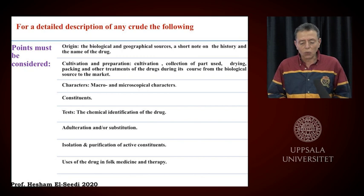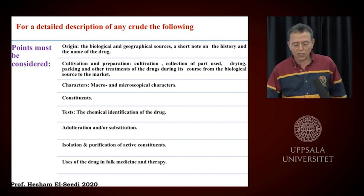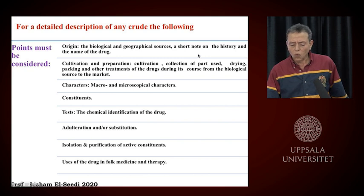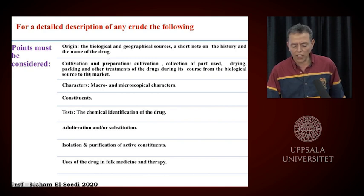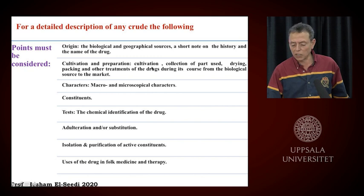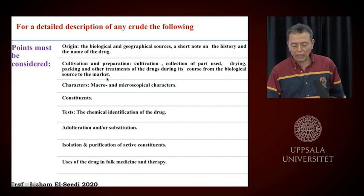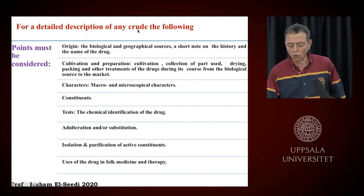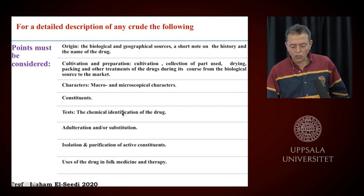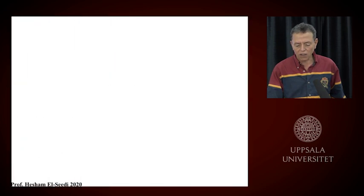For details, the description of any crude drug should consider the following: what is the original — the biological and geographical source. You must give a short note about the history and the name of the drug. Then comes cultivation and preparation: where this plant has been cultivated, how they collect the part used, how they make drying and packing. All these are important factors to have a safe crude drug, from biological source to the market. The constituents, adulteration tests, isolation, et cetera, we will study one by one in the following slides.